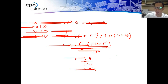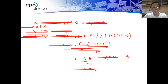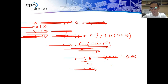To solve for the angle, we take the inverse sine of 0.376. The angle of refraction is 22.0 degrees.